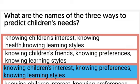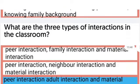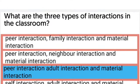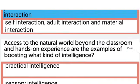The right answer is knowing children's interest, knowing preferences, and knowing learning styles. The next one: What are the three types of interactions in the classroom? The right answer is peer interaction, adult interaction, and material interaction.